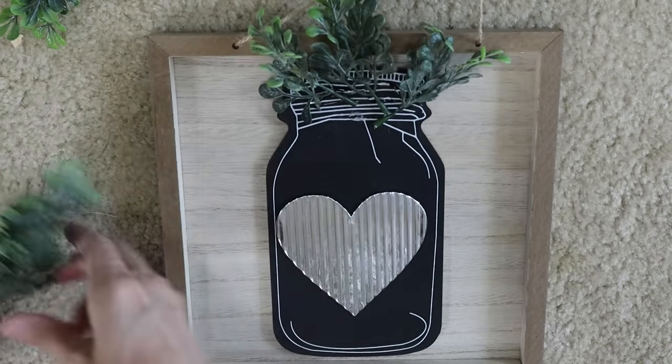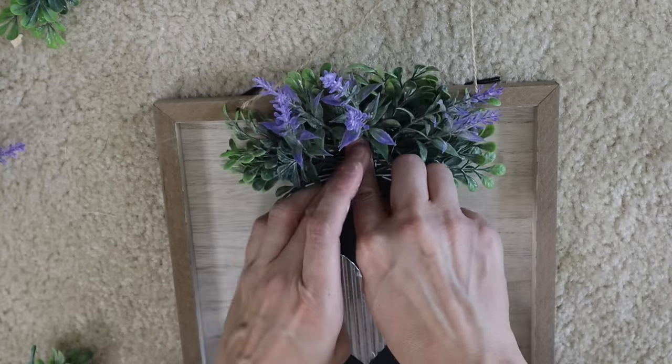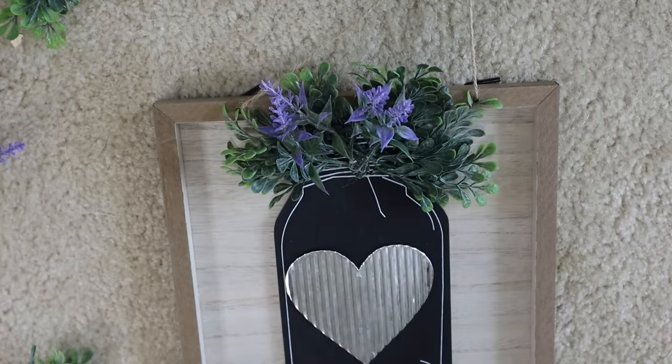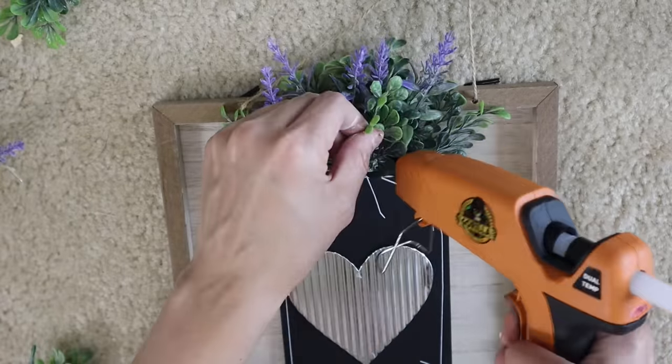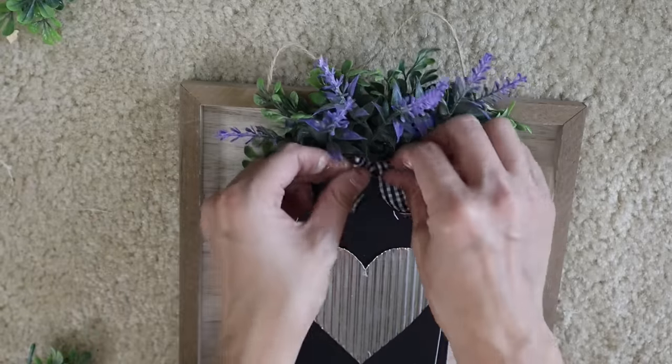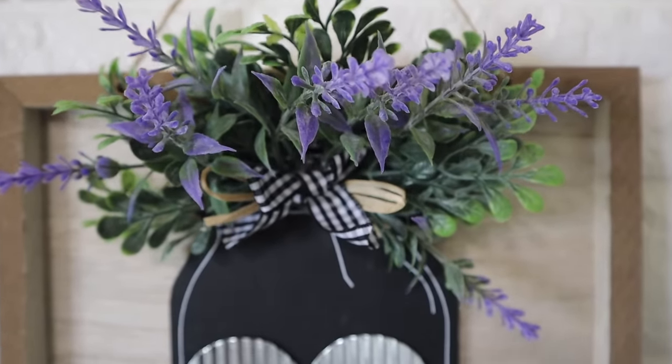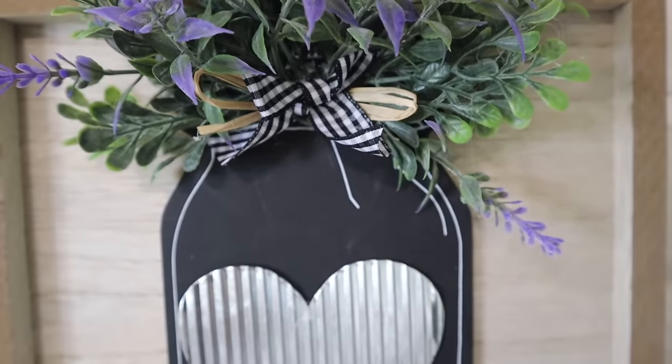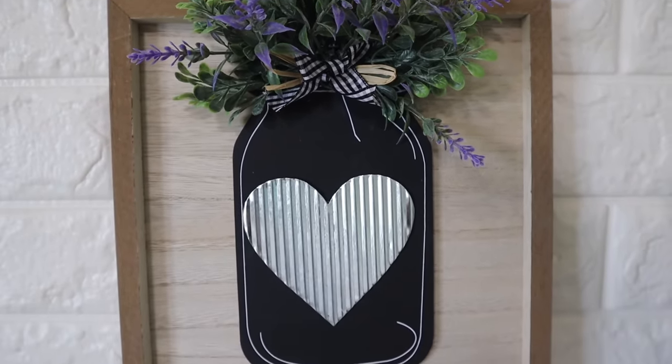So I glued that chalkboard mason jar down, and then I did have a galvanized heart. This is from a Valentine sign, and I just pulled it off because I wasn't using it, and then I just save a ton of things. Adding boxwood, lavender, and some bows. Here we go. That is all I did for this one. It's super easy. You didn't need anything special for this one. Just some old Valentine decor.